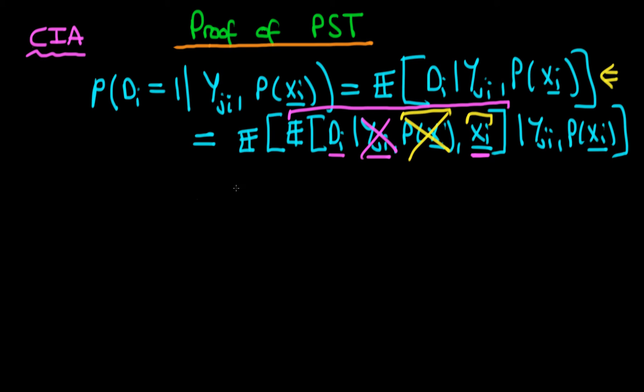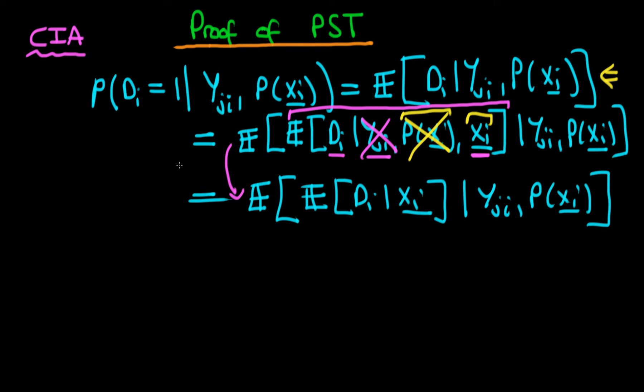I'm going to rewrite this just so that we have it in its new form, which is we have the expectation of the expectation of di given xi, conditioning for the outside expectation on yji and p of xi. Just to reiterate, to go from here to here, we have used the conditional independence assumption.